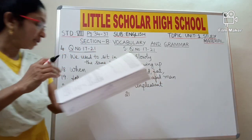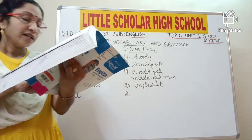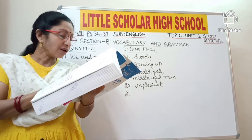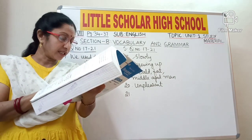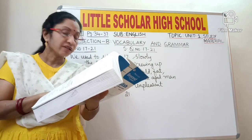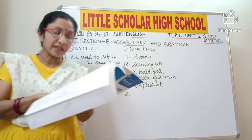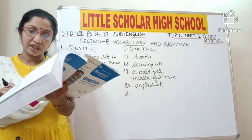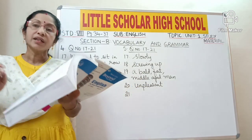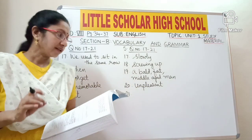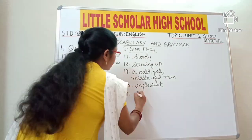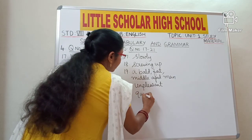Question number 21: 'Her mother asked loudly from the veranda.' The word 'loudly' is underlined. We are asked to write the opposite of 'loudly', which is 'quietly'. Opposite of 'loudly' is 'quietly'.